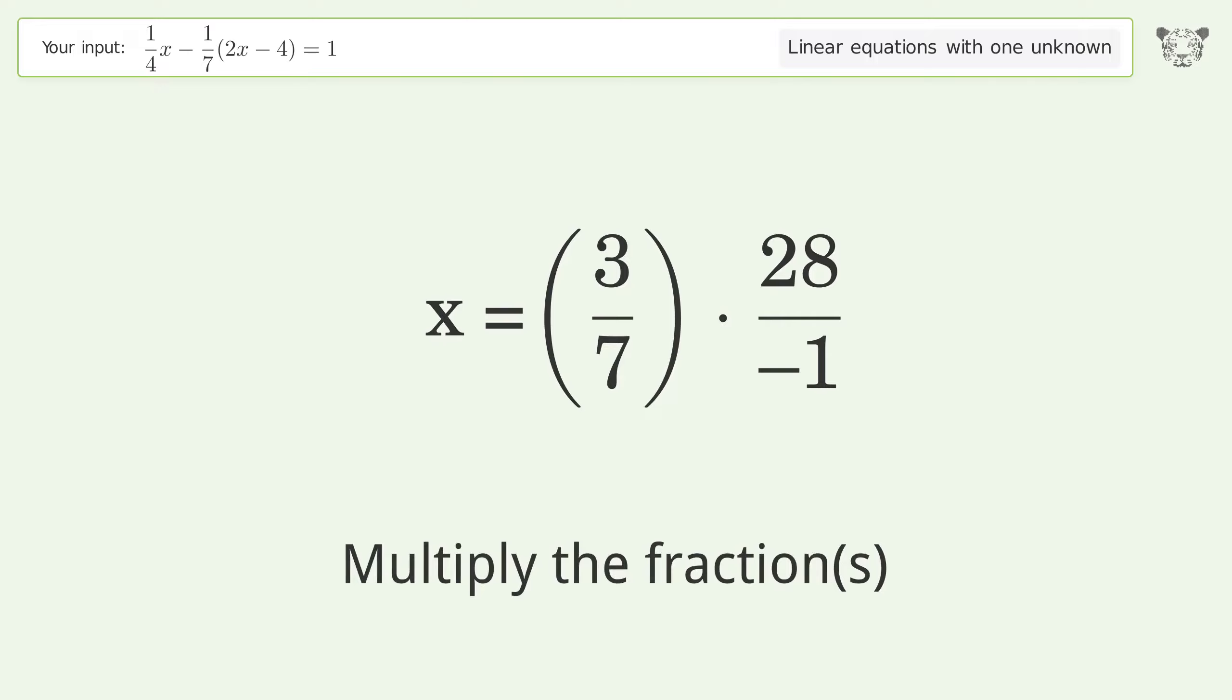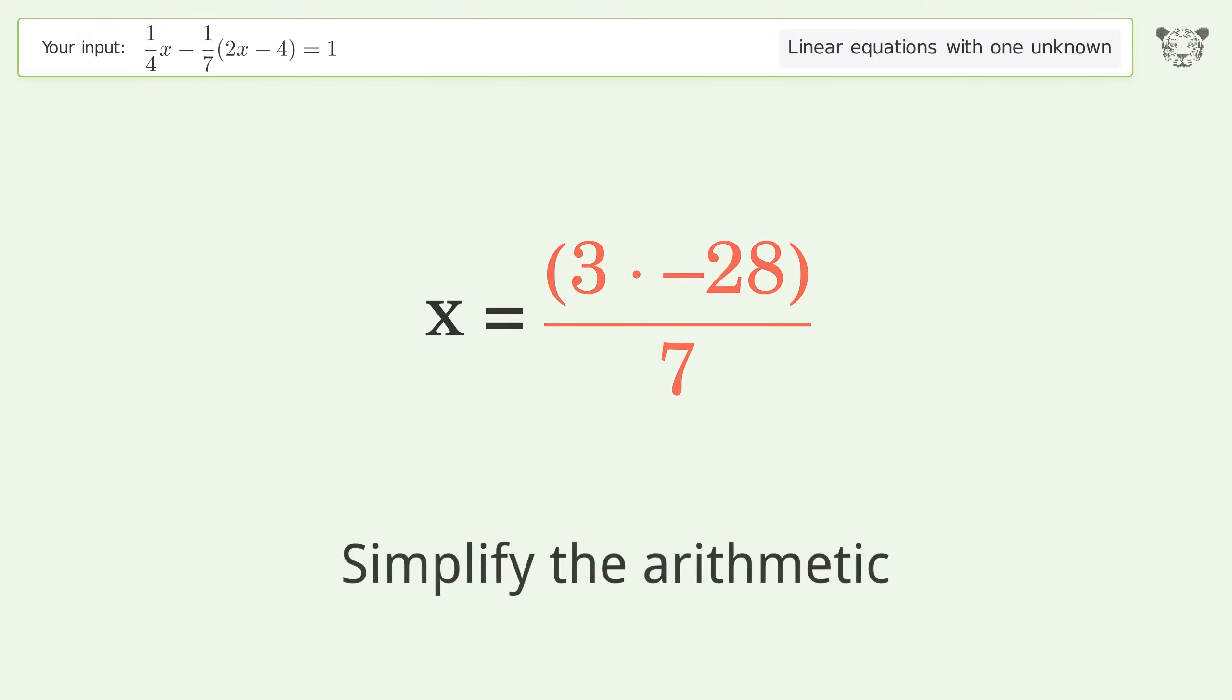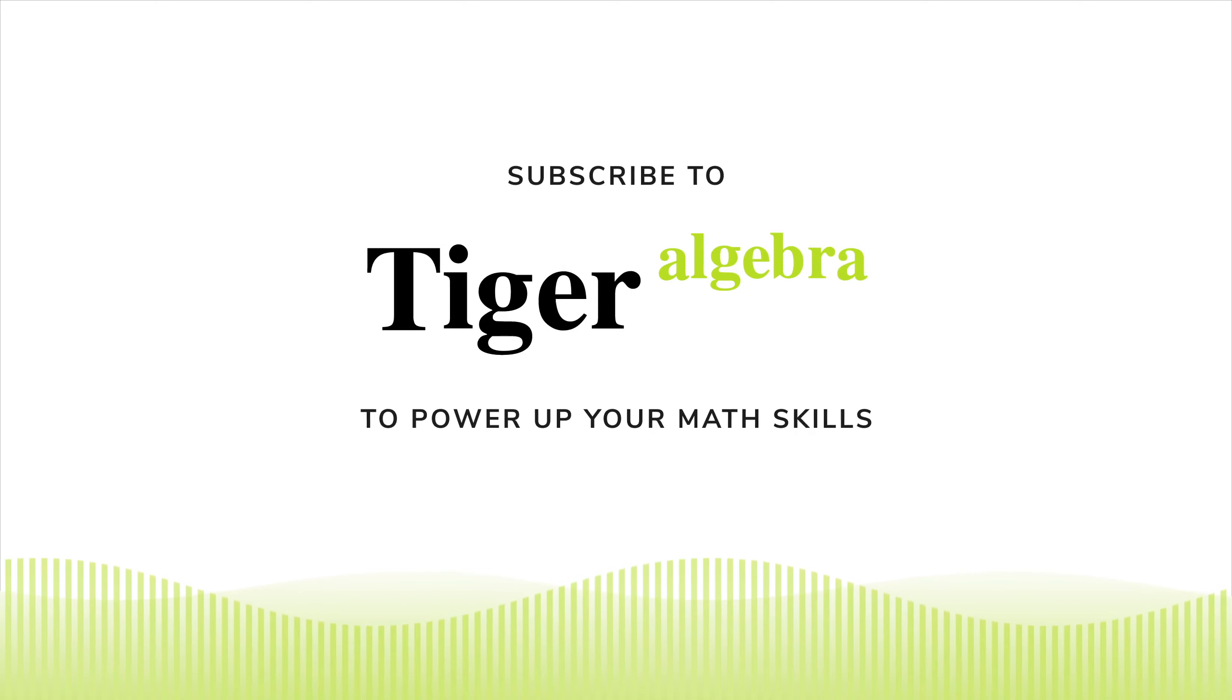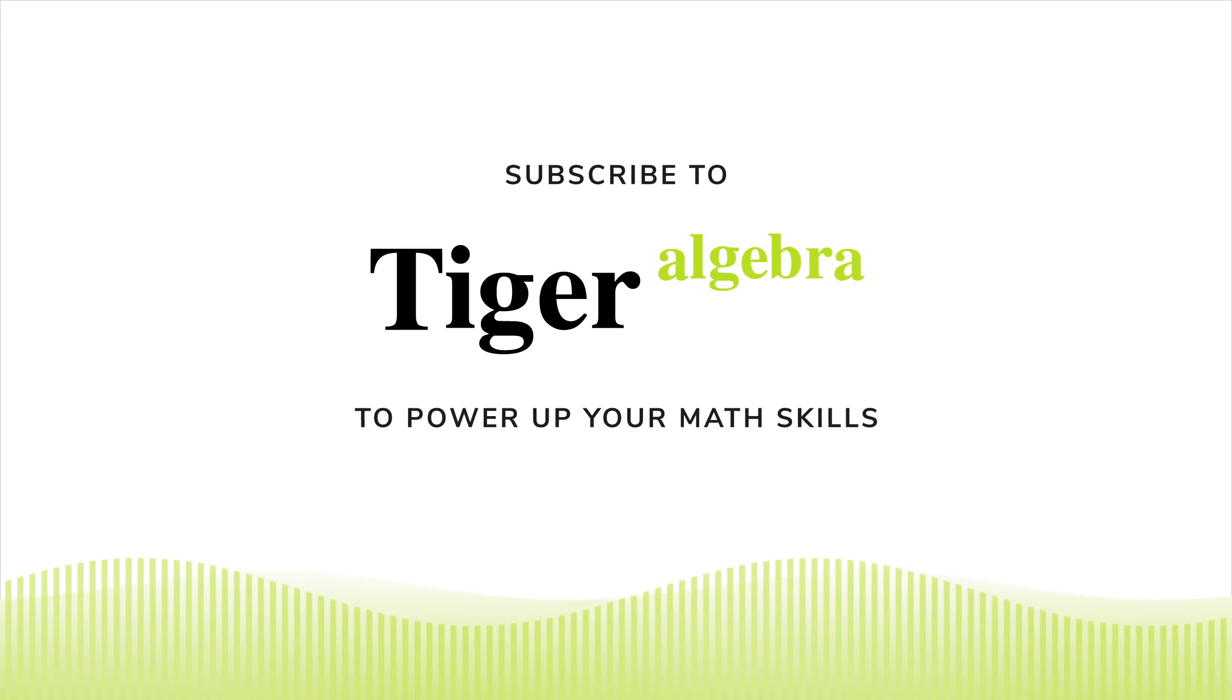Multiply the fractions and simplify the arithmetic. The final result is x equals negative 12.